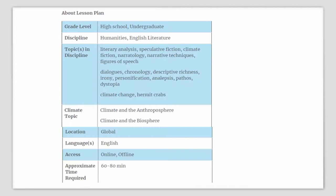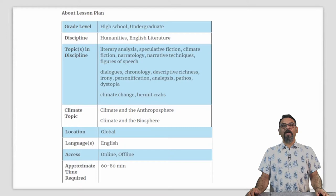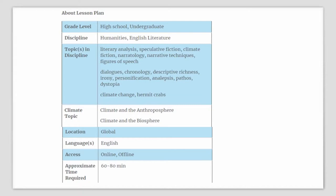If you are a teacher in English literature teaching literary analysis, speculative fiction, climate fiction, narratology, narrative techniques, figures of speech, dialogues, chronology, descriptive richness, irony, personification, pathos, dystopia, and so on, we invite you to take a closer look at this particular lesson plan. This lesson plan contains readings to first introduce a list of literary terms for your students, a short video about four minutes in length to explain the behavior of hermit crabs, a short story about the interactions between humans and hermit crabs as an example of climate fiction, and a classroom activity.